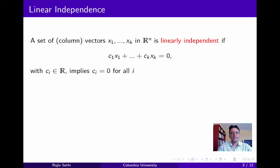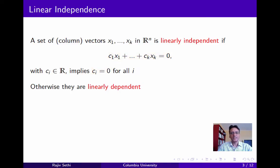First let's define linear independence. Suppose you have a set of k column vectors in R^n. We say that these vectors are linearly independent if whenever a linear combination of these vectors equals zero, then all of the coefficients c_i must also equal zero. And we say that they are linearly dependent otherwise.